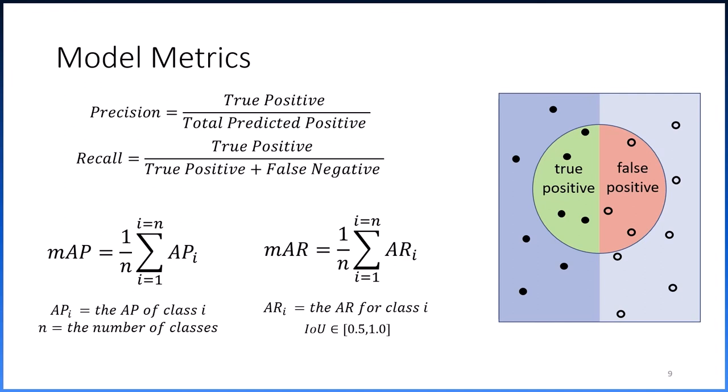Primarily, we evaluate our model using the mean average precision and mean average recall. Mean average precision is the mean of average precision across all classes, where average precision is the mean precision for recall values from 0 to 1. Similarly, mean average recall is the mean of the average recall across all classes, where average recall is the mean of the recall over all IOU thresholds from 0.5 to 1.